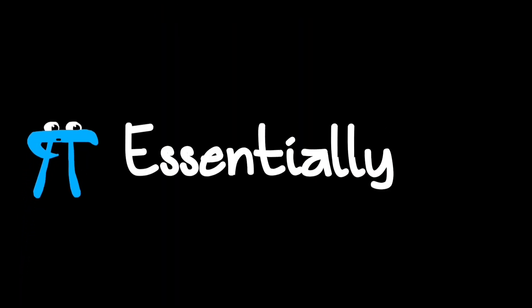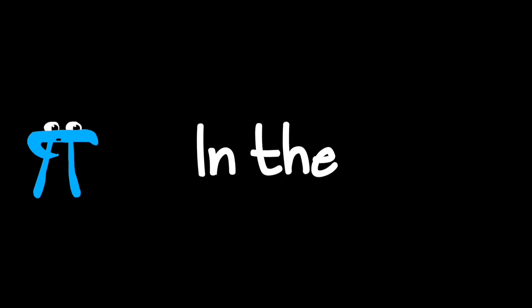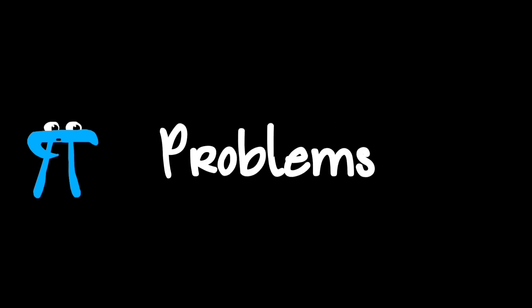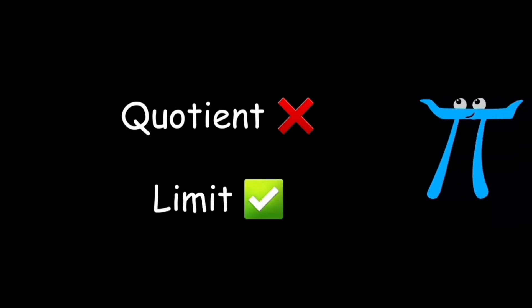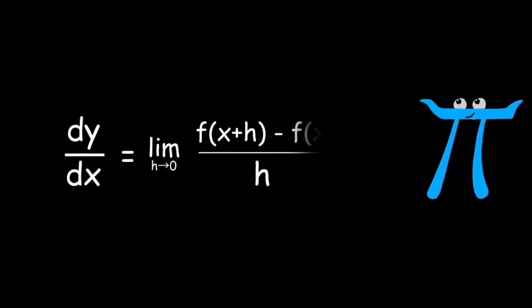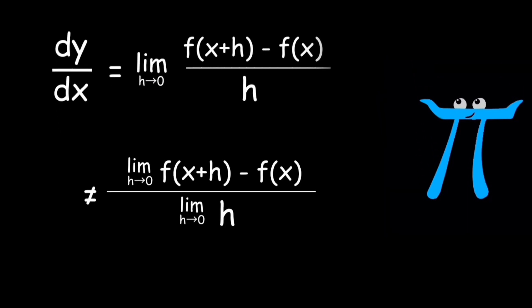So calculus was essentially rewritten from ground to top in the following years to avoid these problems. And derivative was no longer a quotient, but it is now a limit. Limit of h approaches 0, f of x plus h minus fx over h. And because we cannot express this limit of a quotient as a quotient of limits, because both numerator and denominator go to 0, which is an undefined form, derivative is not a quotient.